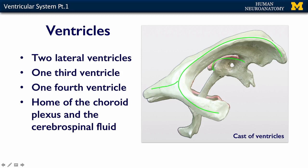The midline is the third ventricle, and here is the cerebral aqueduct. The fourth ventricle is here, and you can see — barely shadowed — the lateral ventricle from the other hemisphere.